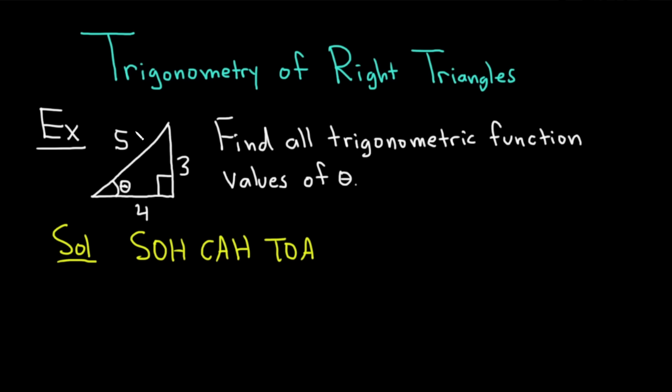I'm going to go ahead and label everything in the triangle so you see it. The 5 is going to be our hypotenuse, the 4 is our adjacent, and the 3 is our opposite. It's opposite the angle. So let's go ahead and write the answers down.